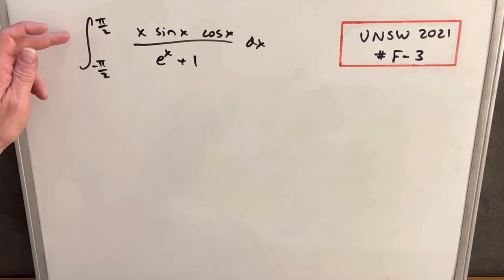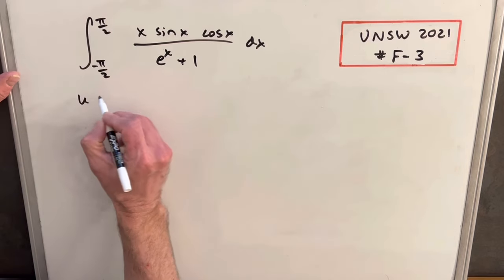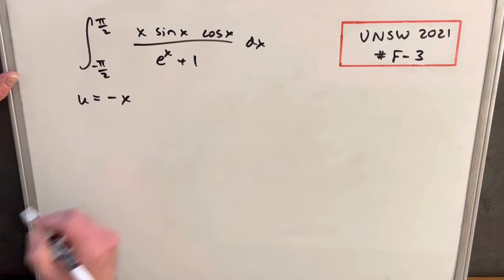The thing that stuck out for me was these bounds. It's symmetrical, minus pi over 2 to pi over 2. It makes me think we could do almost like King's Principle, using the symmetry, some type of substitution. What I came upon was I want to do the substitution u equals minus x.